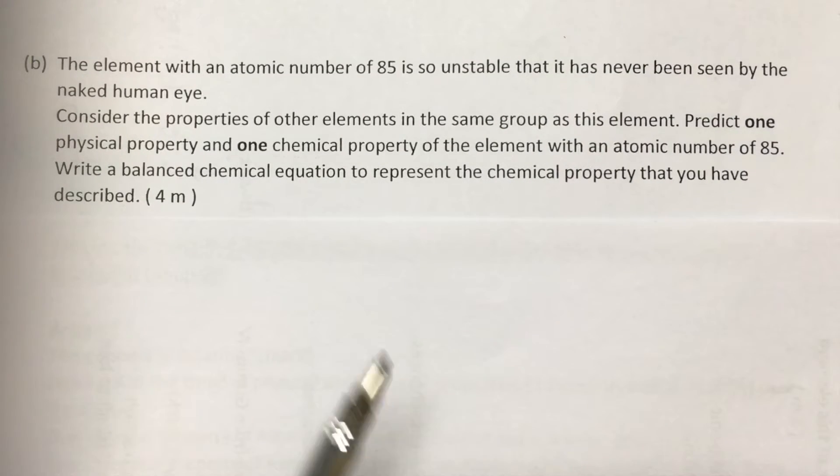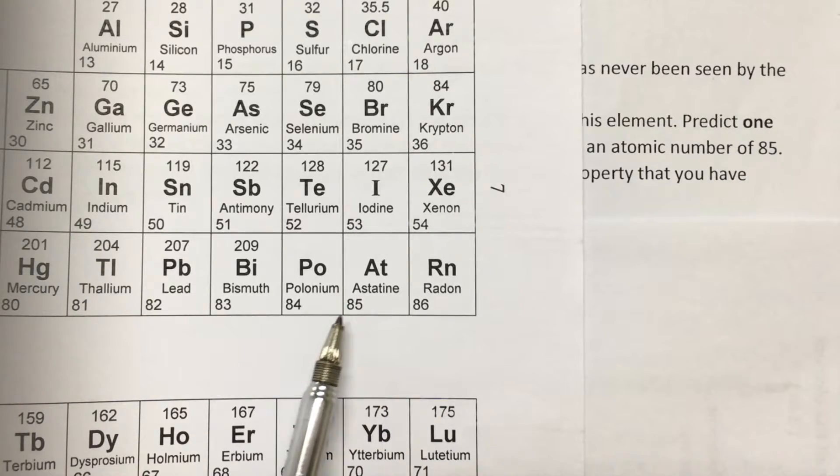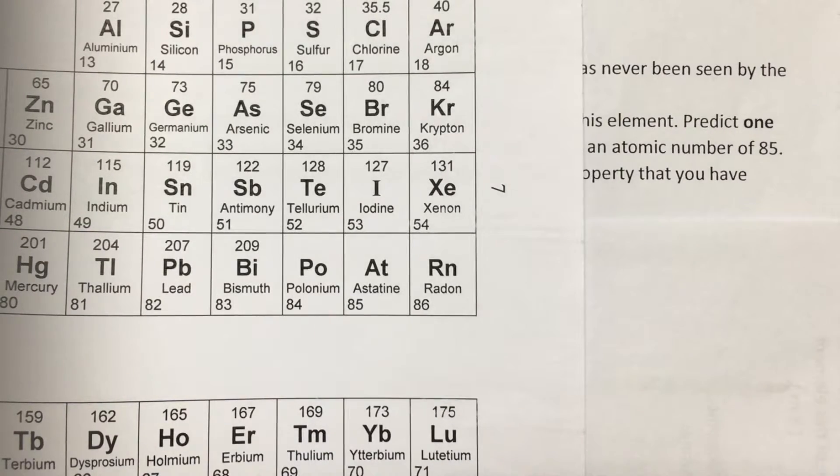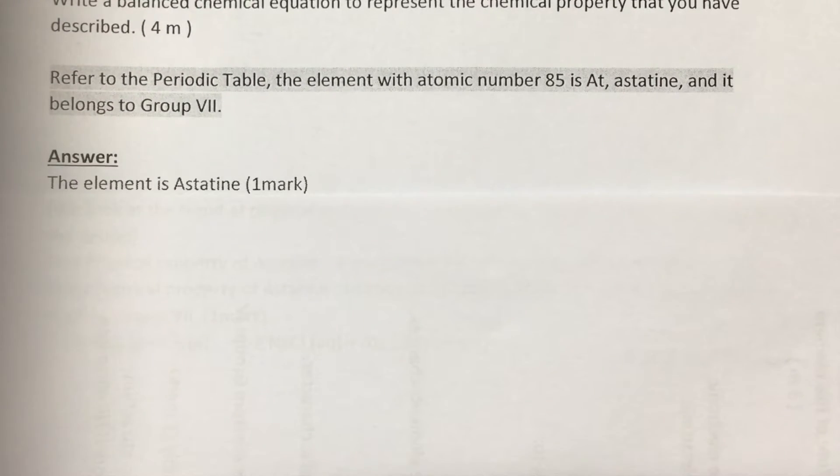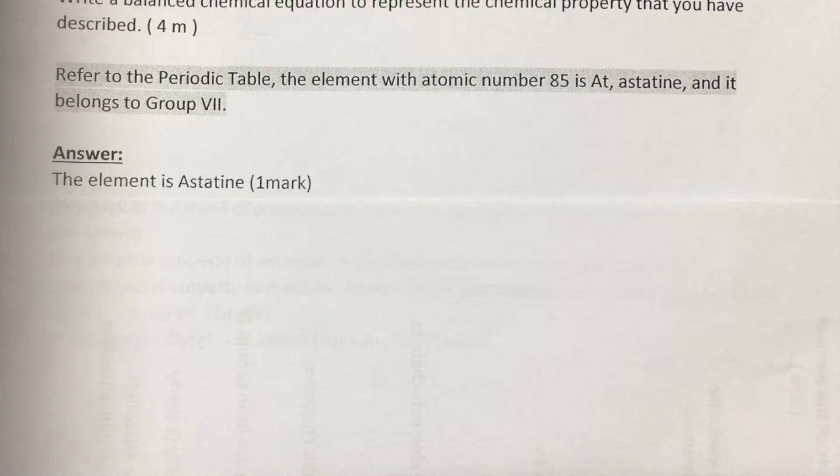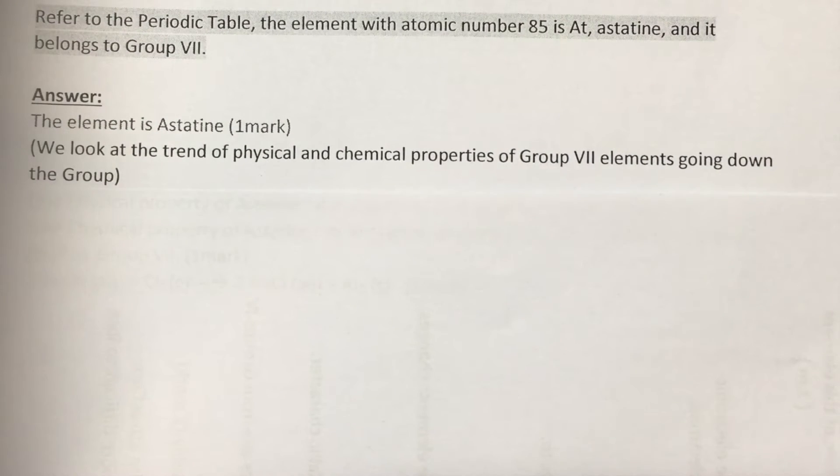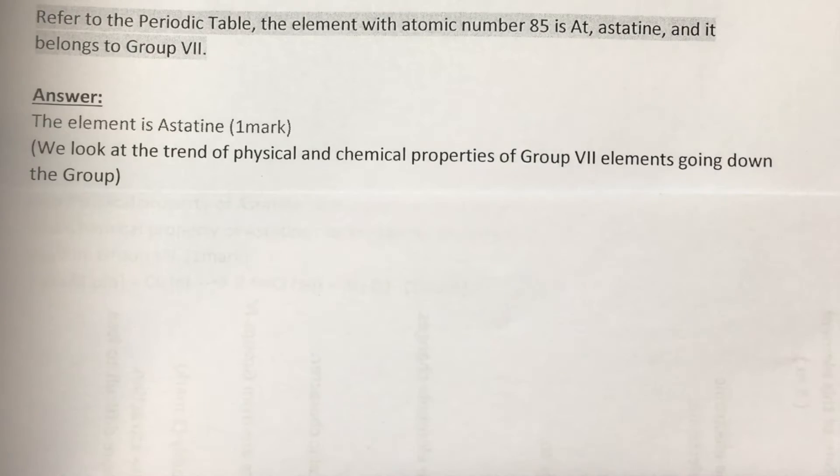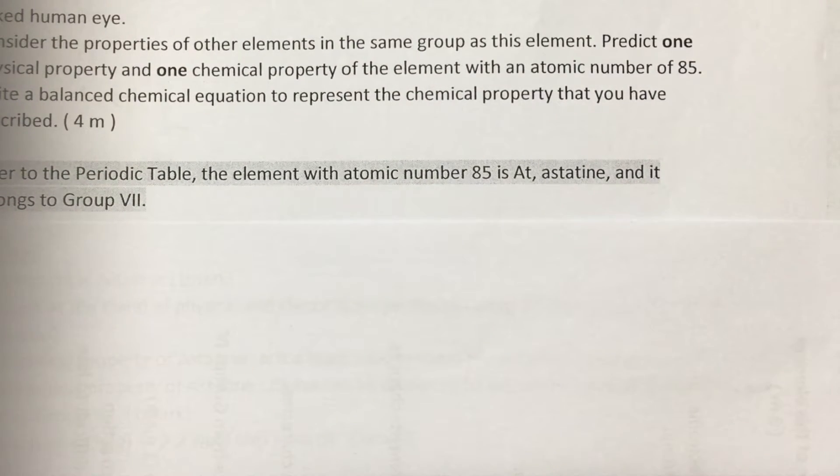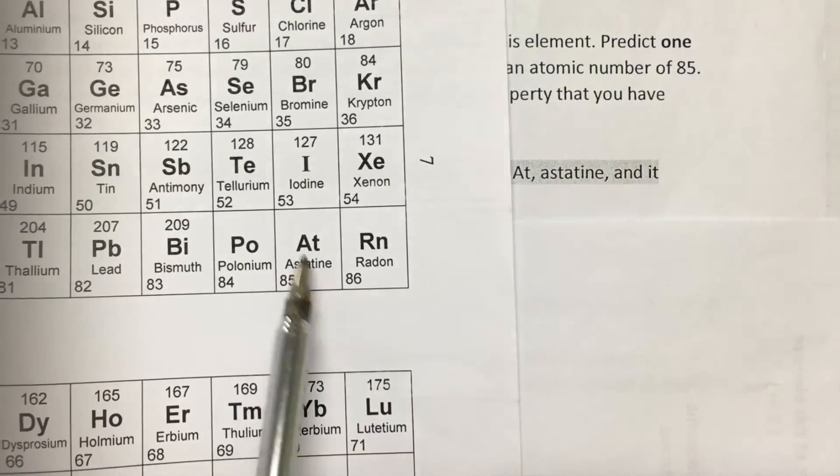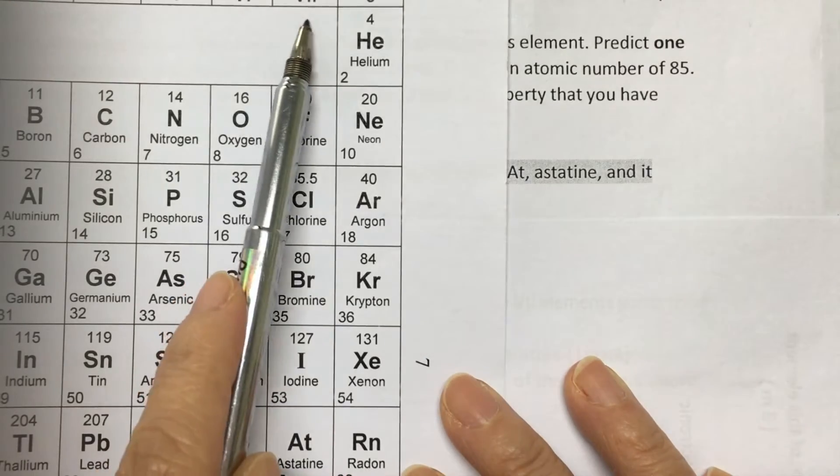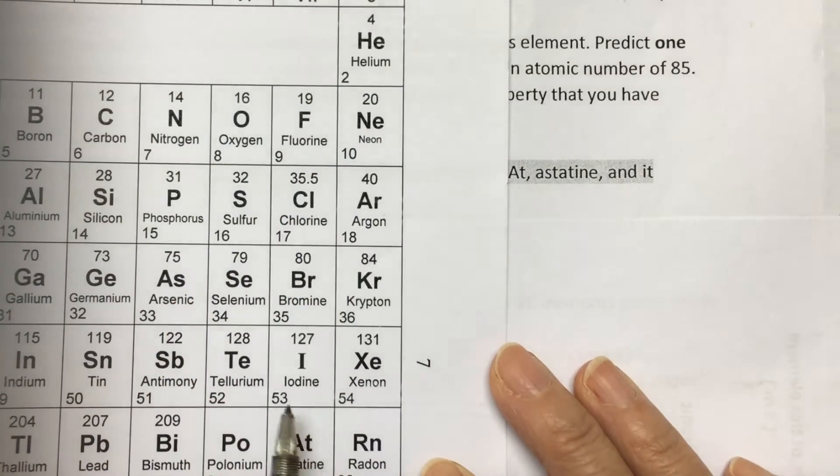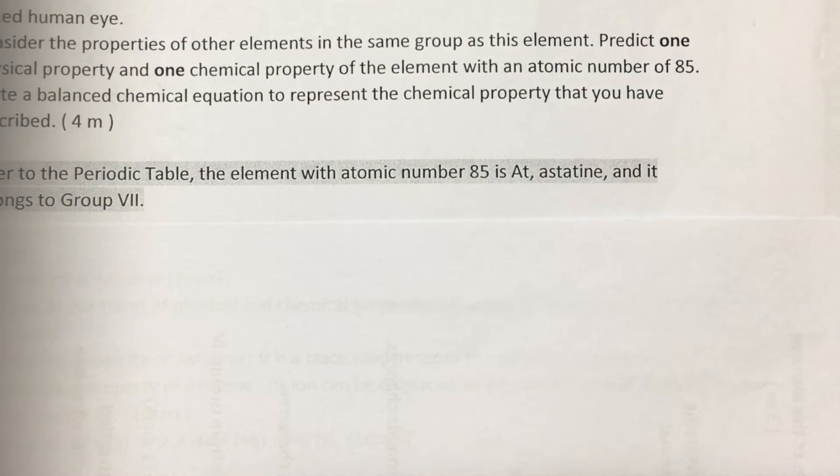First, to identify this element, we need to refer to the periodic table and check the element with atomic number 85, which is astatine. So the first mark: the element is astatine. To consider the physical and chemical property of the element, first we need to look at the trend, the trend for both the physical and chemical properties of group 7. I forgot to mention actually that astatine belongs to group 7.